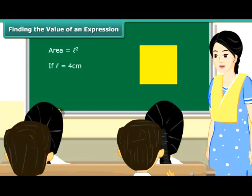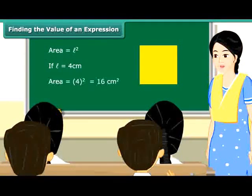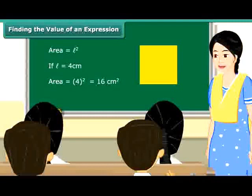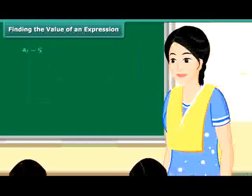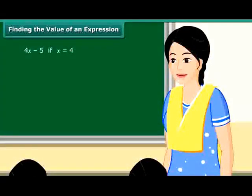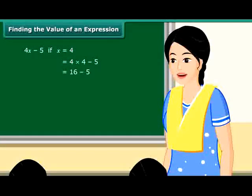See this square — it has an area equal to L². If the value of L is equal to 4 cm, then the area of this square would be 16 cm². There are a number of situations in which we need to find the value of an expression. Consider the expression 4x minus 5. If the value of x is equal to 4, then the given algebraic expression is equal to 4 × 4 minus 5, which is equal to 16 minus 5, that is 11.